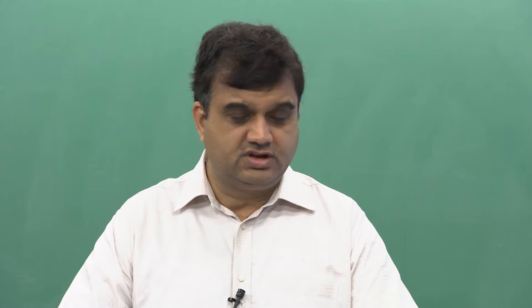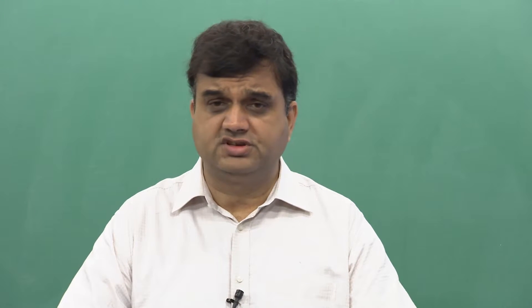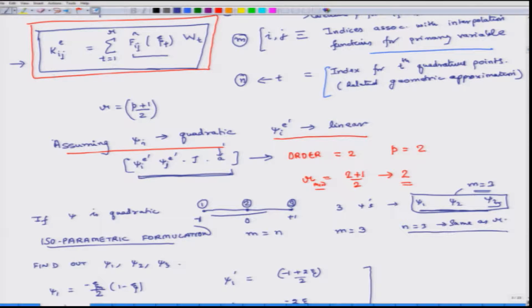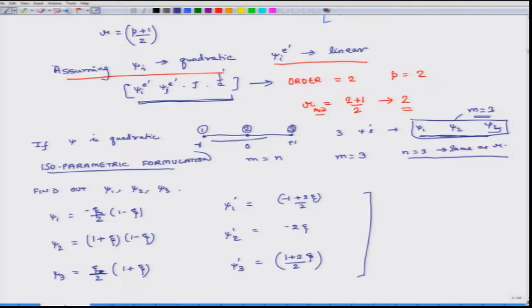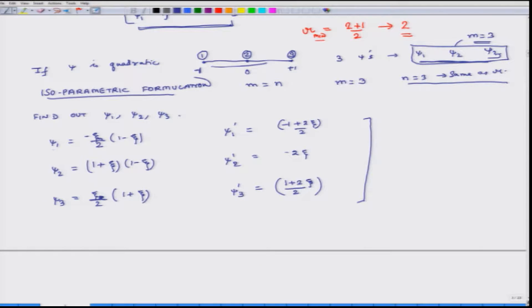Hello, welcome to basics of finite element analysis part 2. Today is the third day of this particular week and we will continue the topic of discussion from the last class. In the last class, we had covered finding the value of k_ij and the function f-hat defined in equation A. We assumed psi is a quadratic function and using these assumptions developed three psi functions — psi_1, psi_2, psi_3 — and also developed expressions for their derivatives. Our next step is to calculate the value of f-hat.